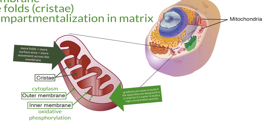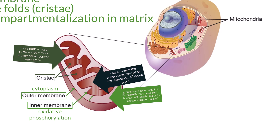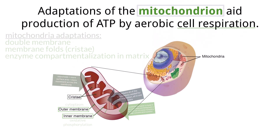The internal matrix holds all of the components for the Krebs cycle and link reaction. Having all of the components in one space ensures that aerobic respiration can happen quickly and energy for the cell can be produced efficiently.